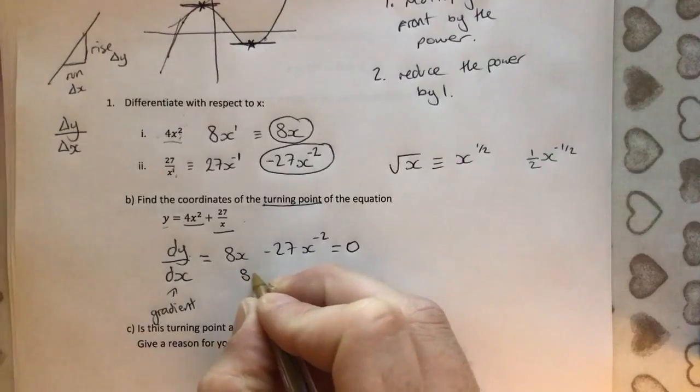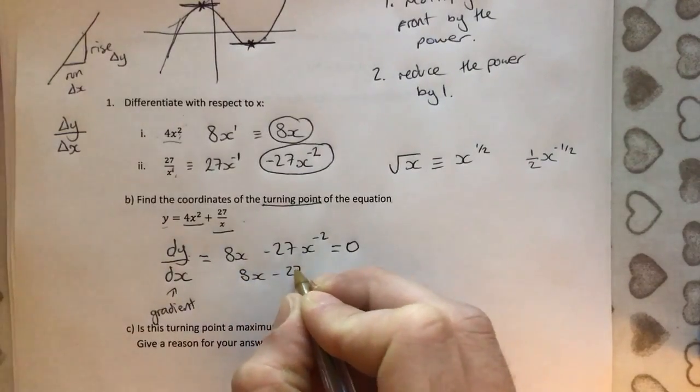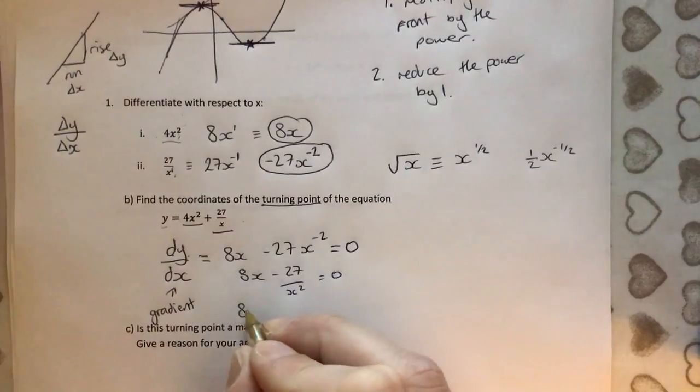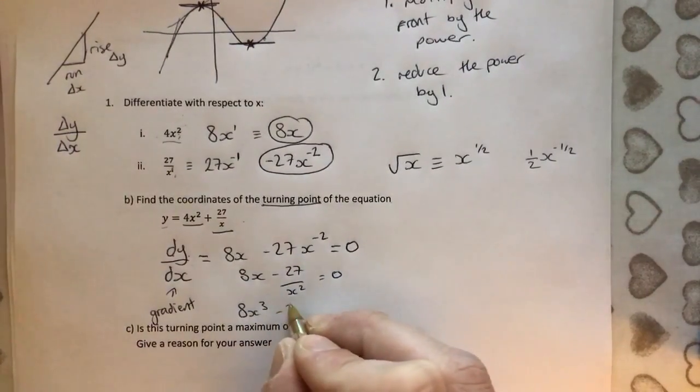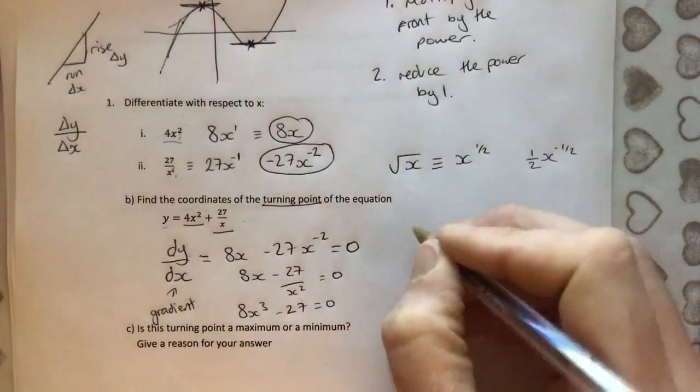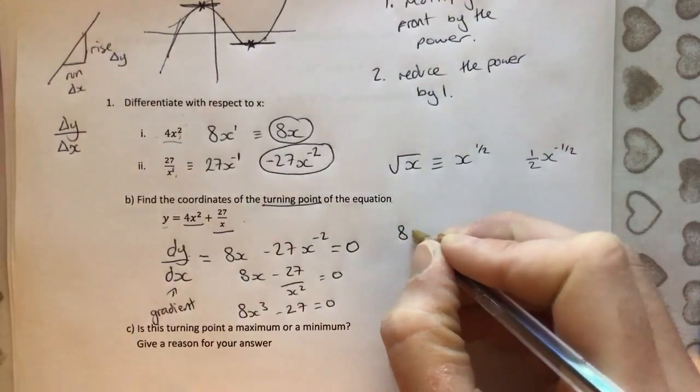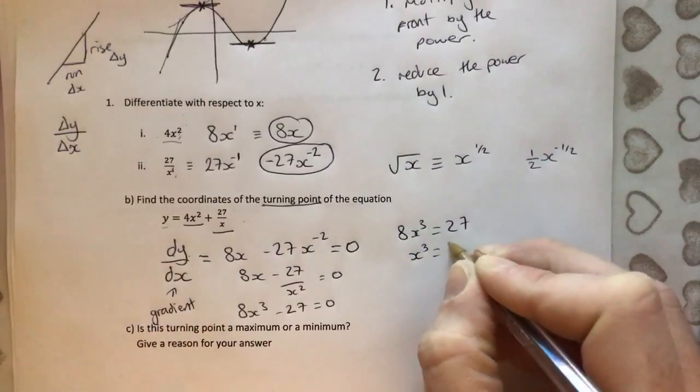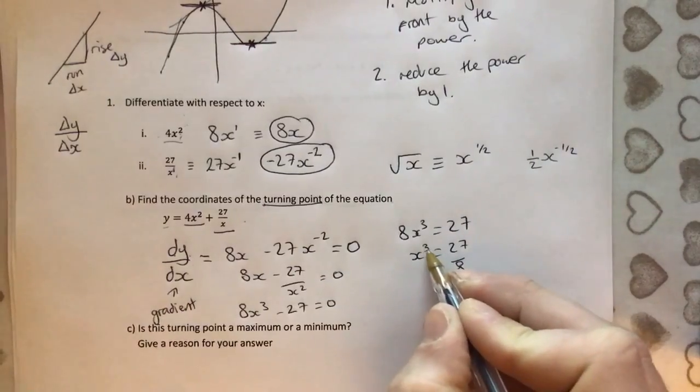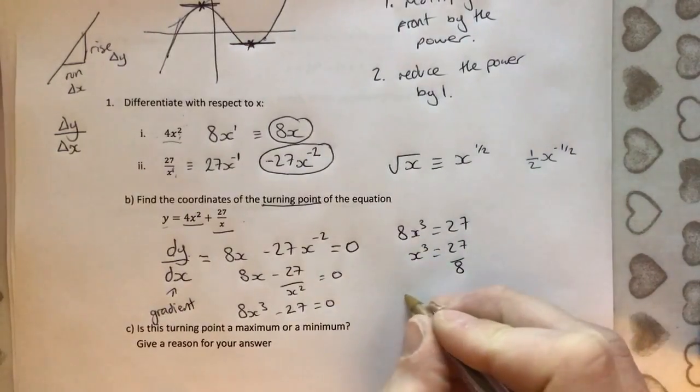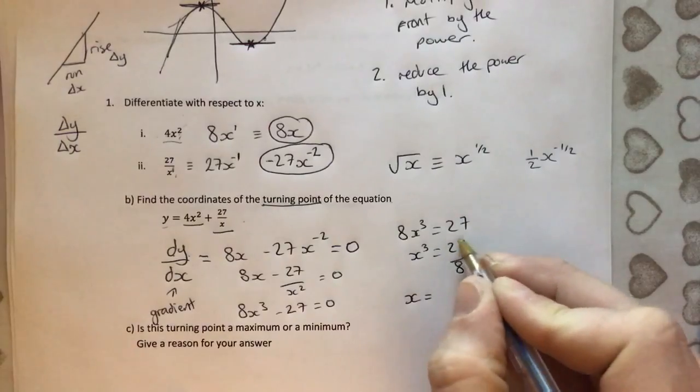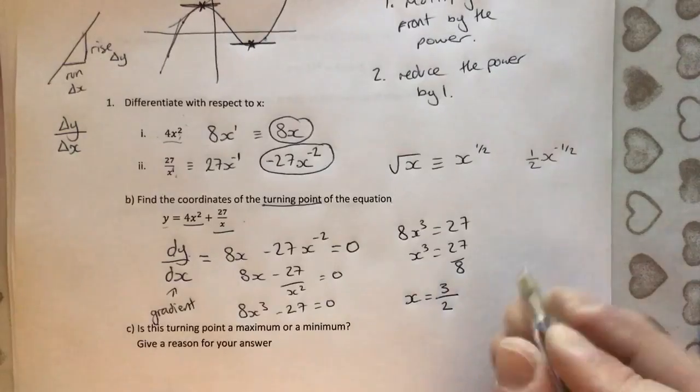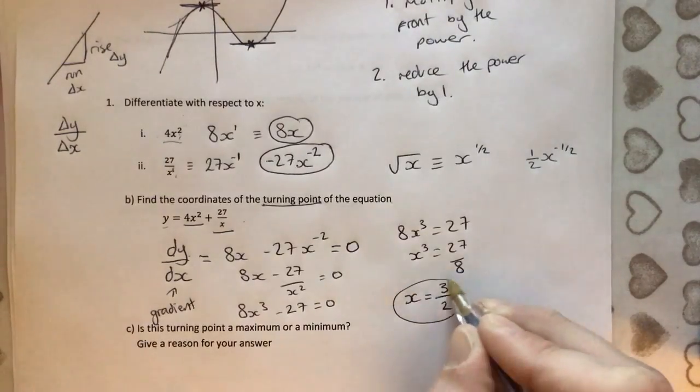So let's rewrite that slightly differently. It's 8x minus 27 over x squared and that equals 0. Multiply by the x squared, we get 8x cubed minus 27 equals 0. So 8x cubed equals 27. x cubed equals 27 over 8. And then if we cube root both sides, we're going to get that x equals, well, the cube root of 27 is going to be 3 and the cube root of 8 is going to be 2. So x equals 3 over 2.